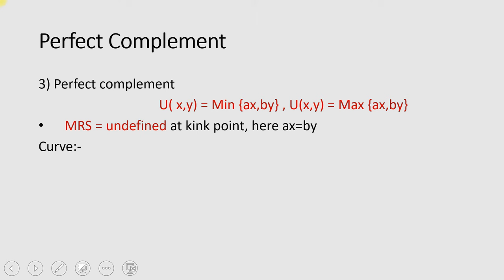Next we have the perfect complement utility function, which is usually represented either in the form of minimum or maximum. For example, a perfect complement utility function will look like this, and many more. One important thing to note here is that the marginal rate of substitution in the perfect complement utility function cannot be calculated using the utility function, because the utility function cannot be differentiated in this case.